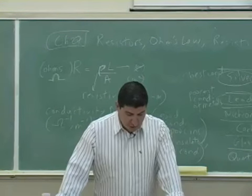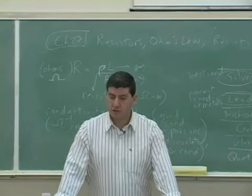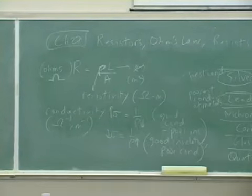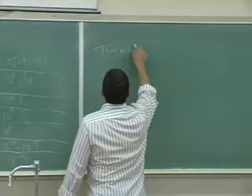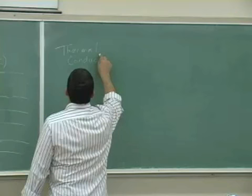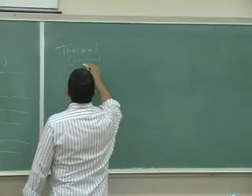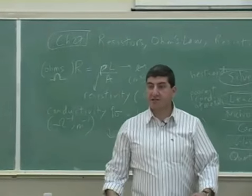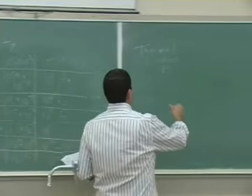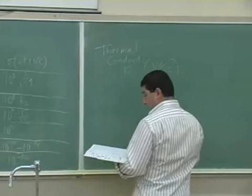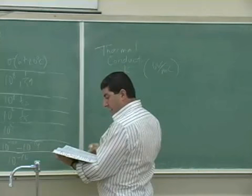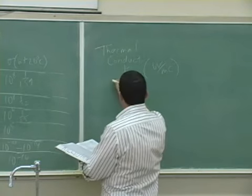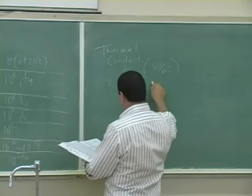It's now going to be the thermal conductivity of the material. And it's the constant K. They use the constant K. And the units are watts per meter Celsius. And then now that one, out of the metals, aluminum is, let's see, out of the metals, silver is the highest. Silver is 427.